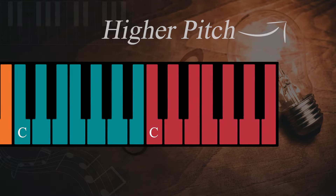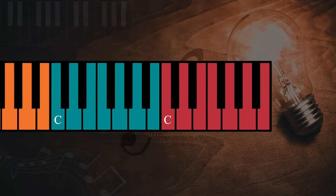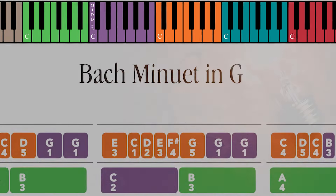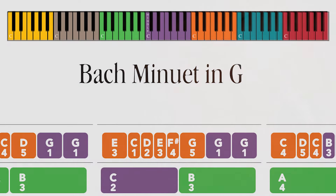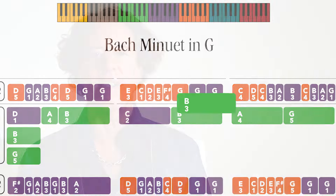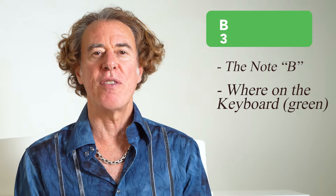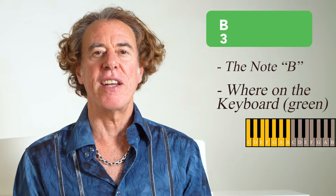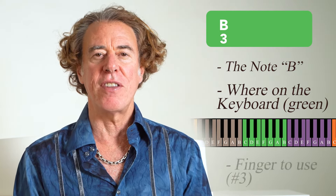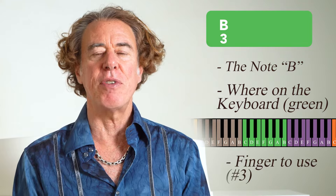The tablatures are constructed with tiles of different colors and widths. Each tile contains three pieces of information: the note that is to be played, where the note is located on the keyboard, and the finger that you'll use to play the note.